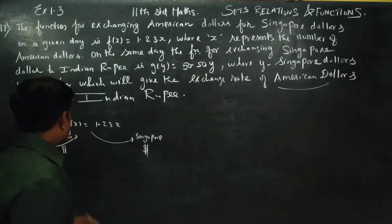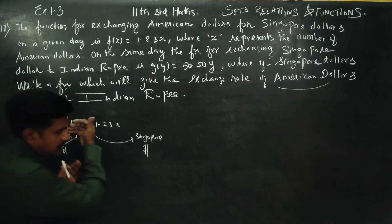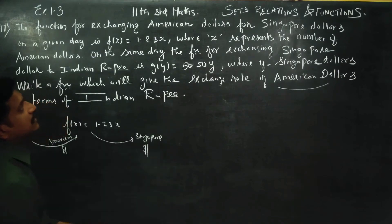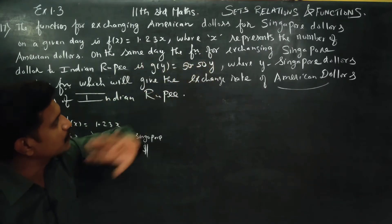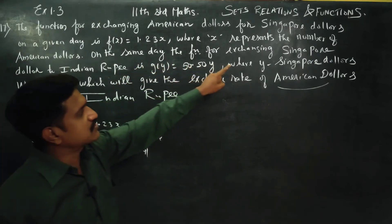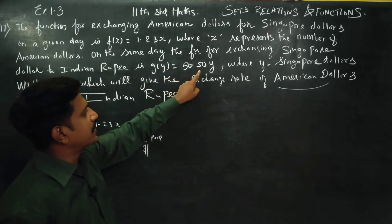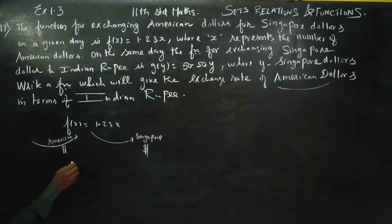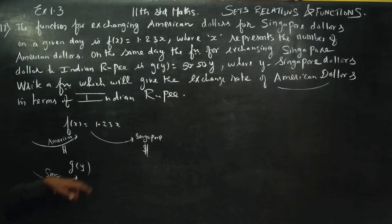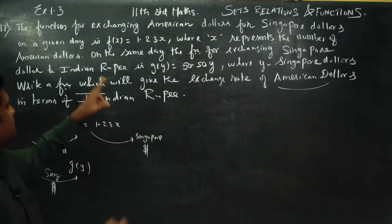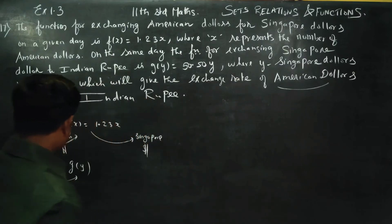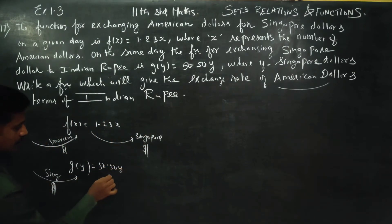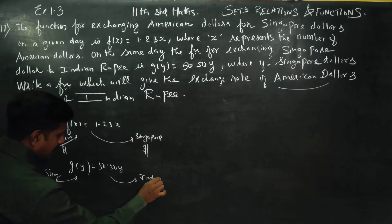You have to exchange American Dollars to Singapore Dollars. Next, on the same day, the function for exchanging Singapore Dollars to Indian Rupees is G of Y, equal to 50.50Y. If you give Singapore Dollars, the output is Indian Rupees.